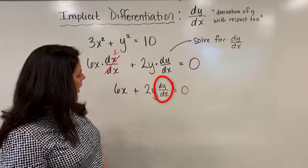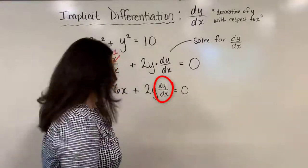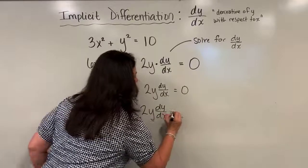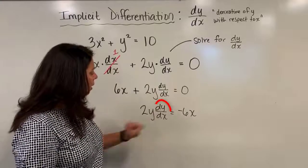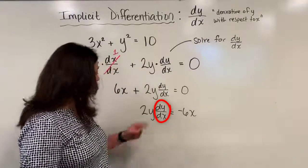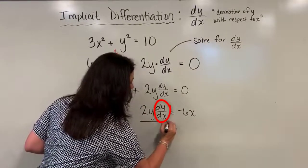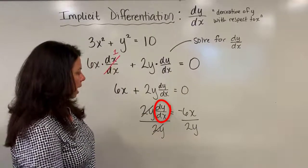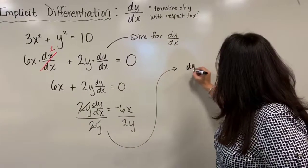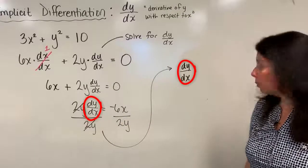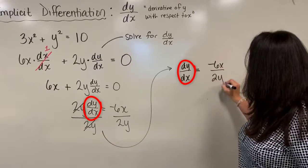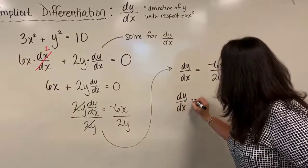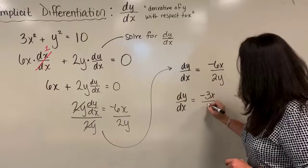I ultimately want to solve for dy over dx. So let's subtract 6x to the other side to start unraveling this equation. So I have 2y times dy over dx is equal to negative 6x. In order to get dy over dx by itself, let's divide by 2y on both sides. 2y divides out with 2y, and now what I'm left with is simply dy over dx equal to negative 6x divided by 2y. We can simplify the coefficients — negative 6 divided by 2 — so dy over dx is equal to negative 3x over y.